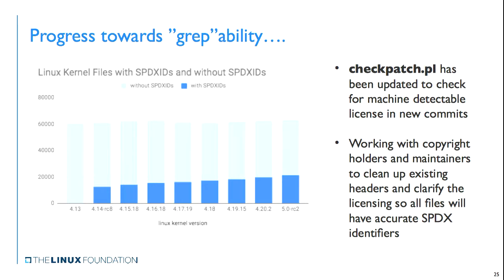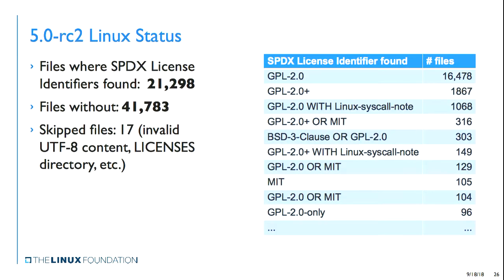The ramp-up is slow, and the ask is: anyone interested and willing to help — if you have copyright or you're working for a company that has copyright, please go in and add the identifiers to your files, get rid of erroneous boilerplates, and clean it up. It will take more sophisticated scripting, but hopefully we'll get to a state where everything is covered. checkpatch already has checks to ensure new commits include the identifier, and we need to continue that.